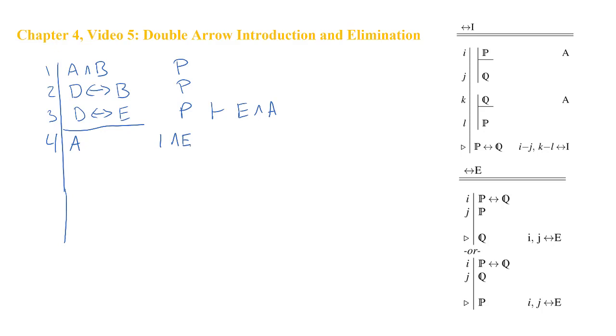We need to get the E, and E is the right-hand side of the double arrow statement in line three. So if we could get the D, that would be wonderful because double arrow elimination will then allow us to get the E. How can we get the D? Well, it's the left-hand side of a double arrow statement in line two. So if we had the B, we could get the D. And in fact, we can easily get that B from line one, just like we got A from line one.